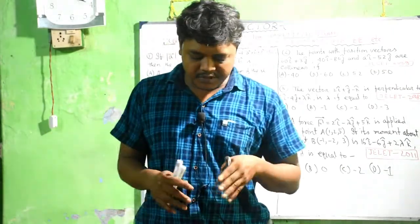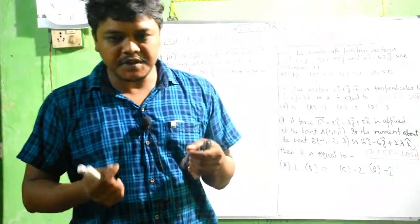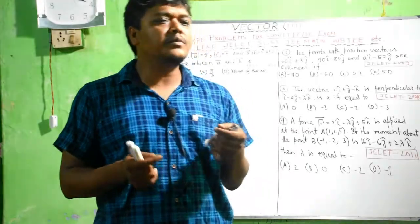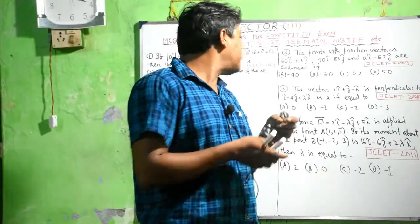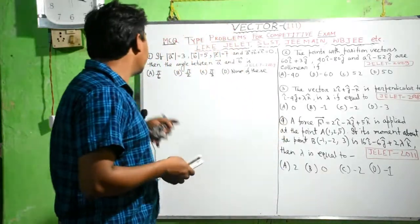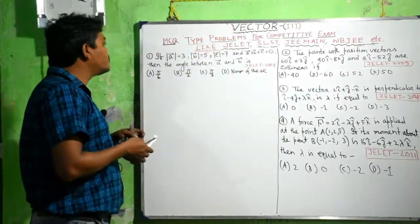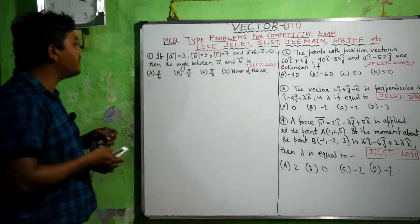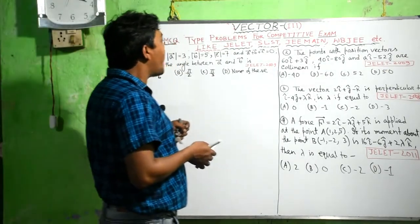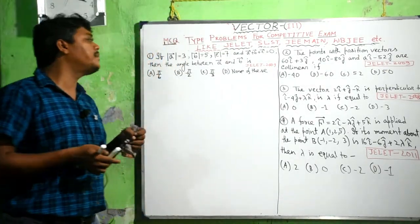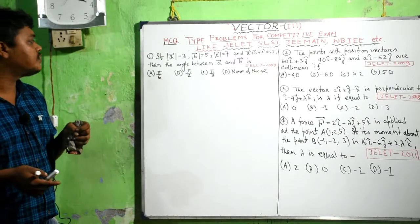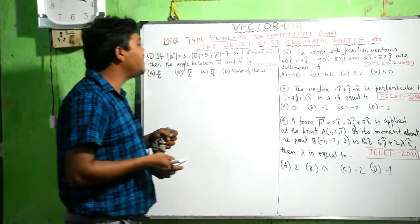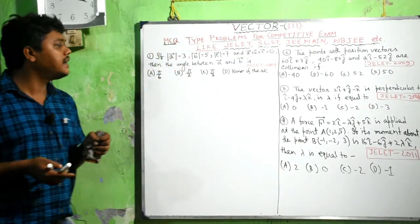The first problem is: if mod A equals 3, mod B equals 5, and mod C equals 7, and A plus B plus C equals 0, then find the angle between A and B.